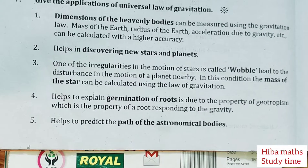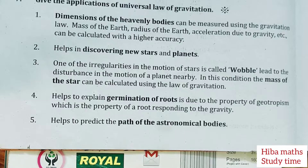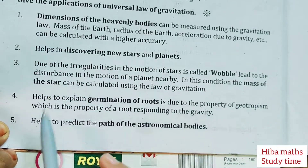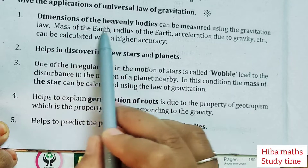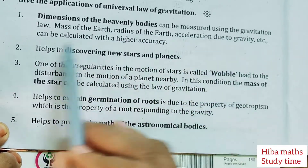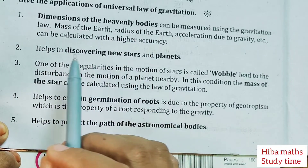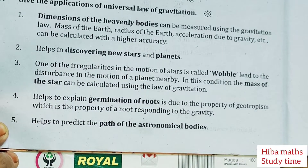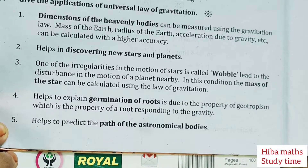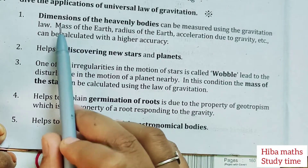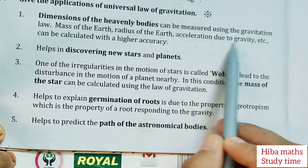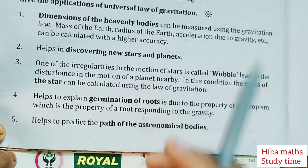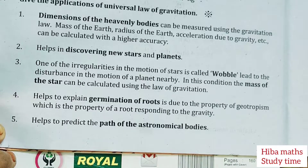Universal Law of Gravitation is used in many applications. Dimensions of heavenly bodies can be measured using the gravitational law — dimensions like mass of the earth, radius of the earth, acceleration due to gravity, etc. These are all measured with high accuracy.